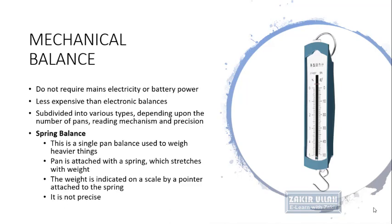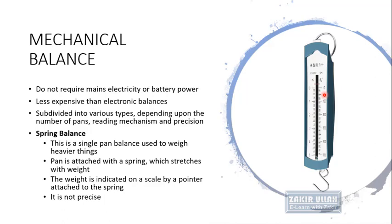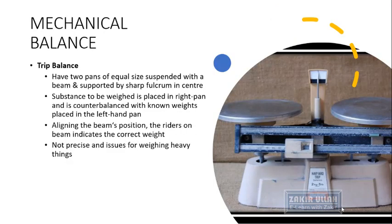The first type is the spring balance. The spring balance is a single pan balance used to weigh heavier things. The pan is attached to the spring and stretches when weight is placed on it. The weight is indicated on a scale by a pointer attached to the spring. As seen in this image, the scale gives us the reading when we hang any object. The measurement of a spring balance is not very accurate or precise.